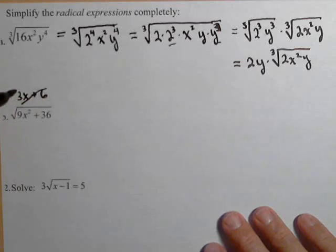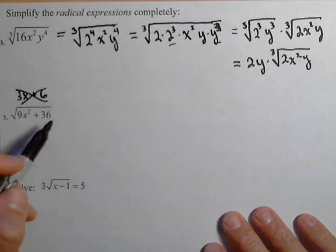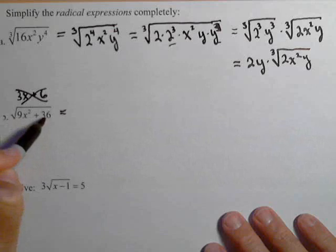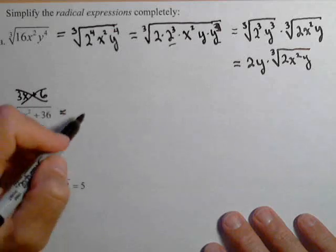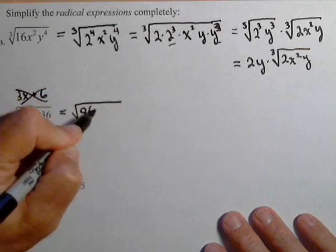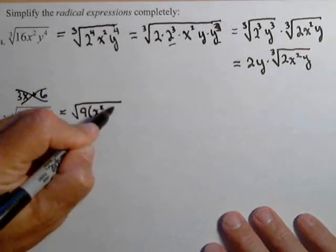That is not true. You cannot split up a radical over addition or subtraction. What we can do is look for things under the radical that may factor. For instance, in this one, I can factor a 9 out of both terms. So square root of 9 times x² plus 4.